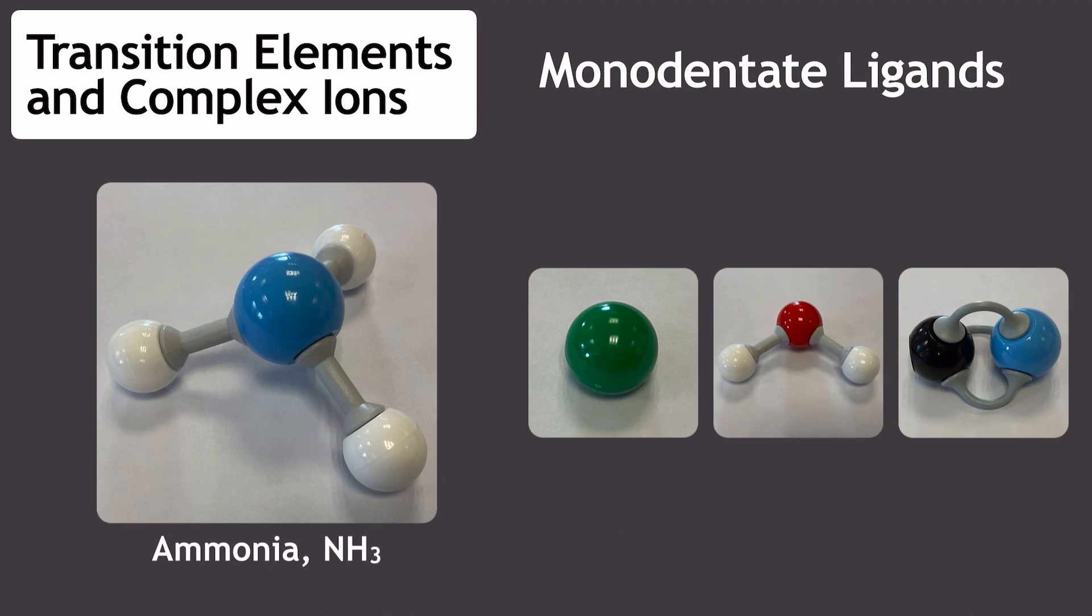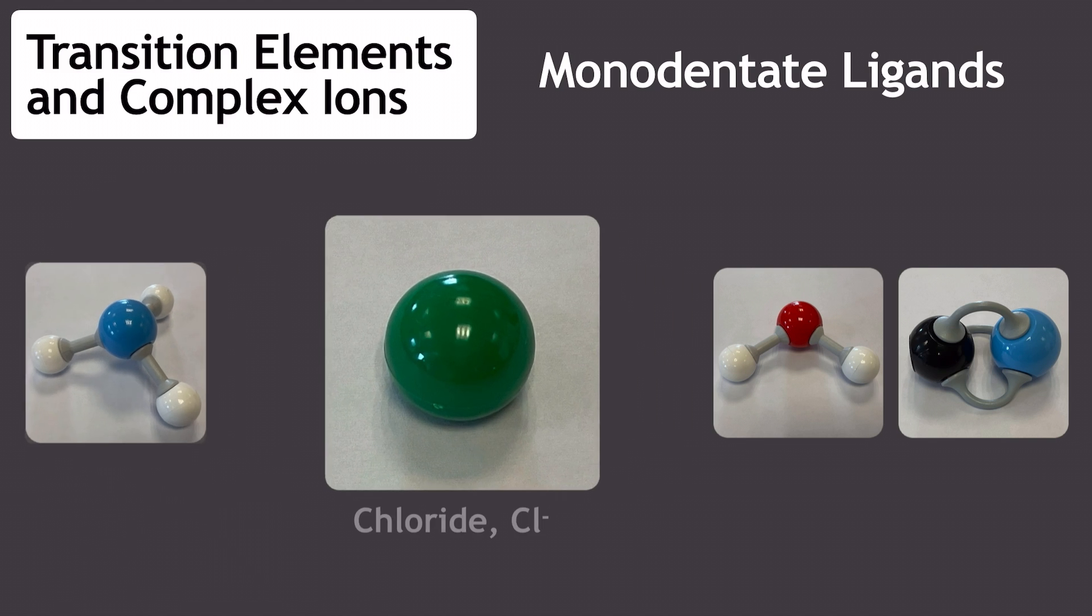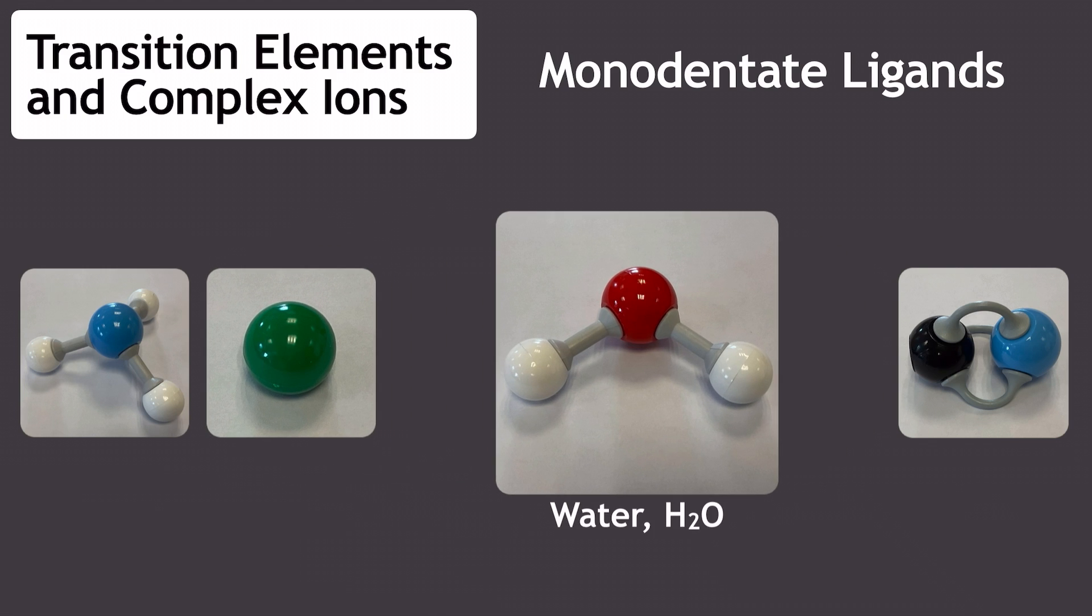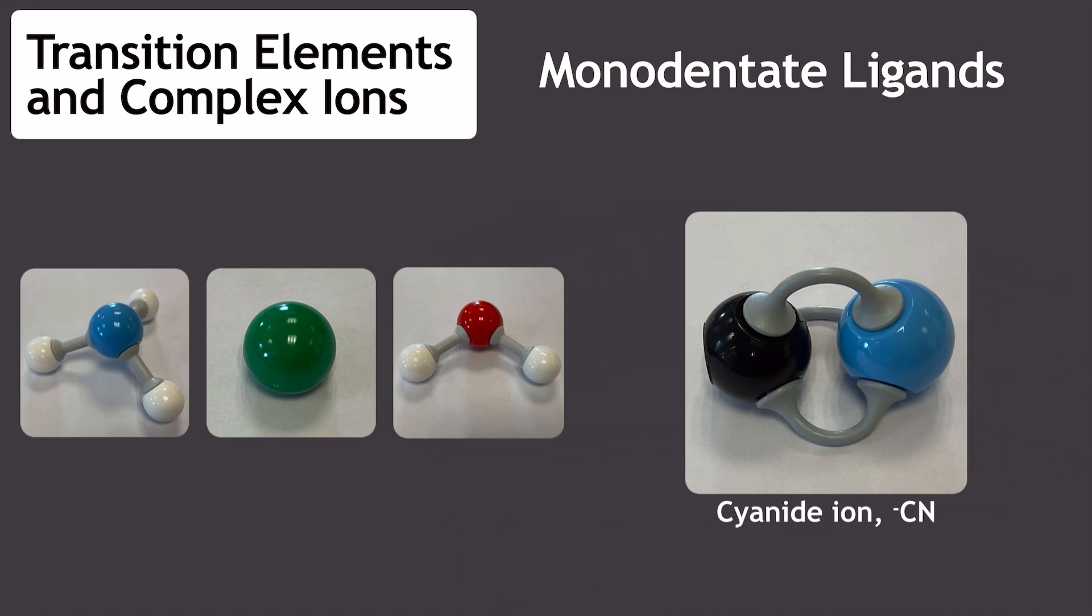Now, so far we've only talked about monodentate ligands, really, and have shown them as part of that structure that we had on screen a few moments ago. Let's have a look at some alternative monodentate ligands before we move on to ligands of a different style. First off here, we've got ammonia, that's a very common monodentate ligand, and the familiar chloride ion that we were looking at in the previous structure. We can also have water as a common monodentate ligand, and then perhaps slightly less common, but definitely more familiar from organic chemistry, we've got the cyanide ion.